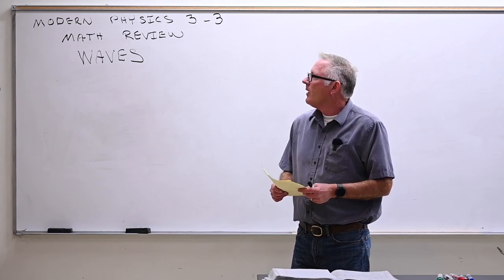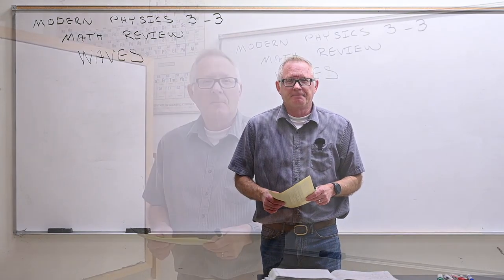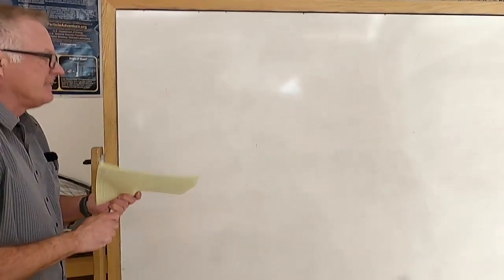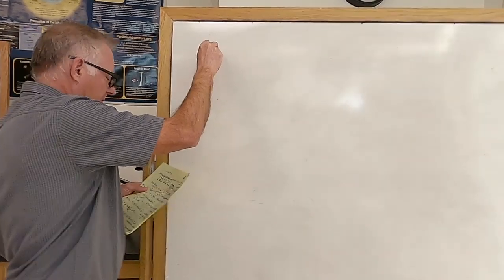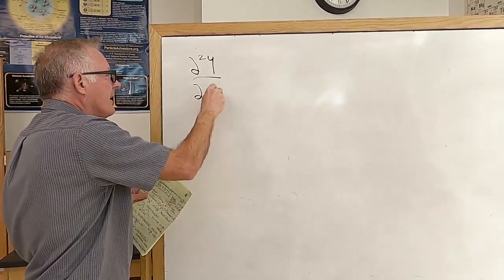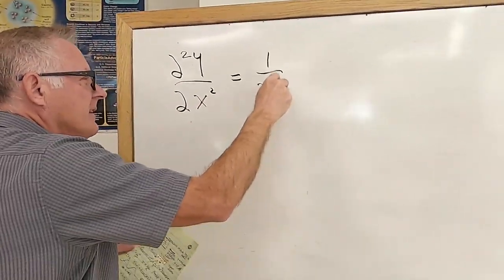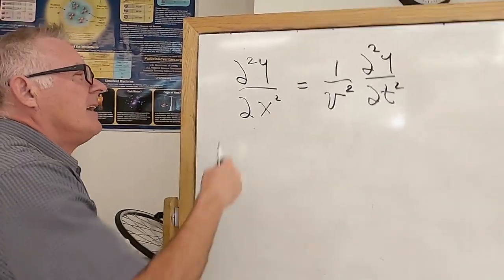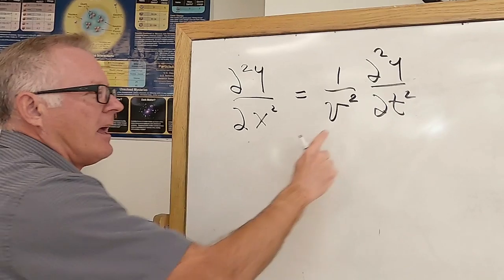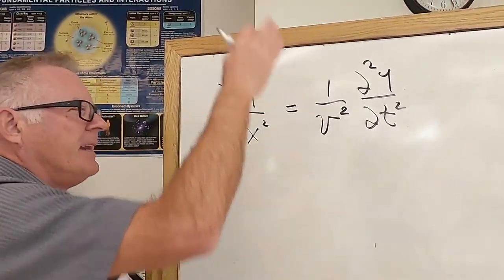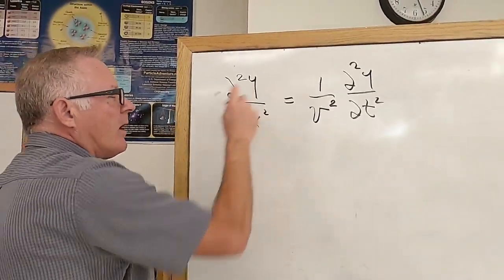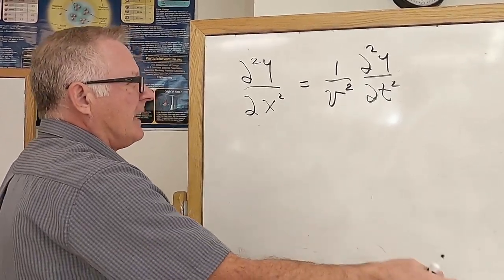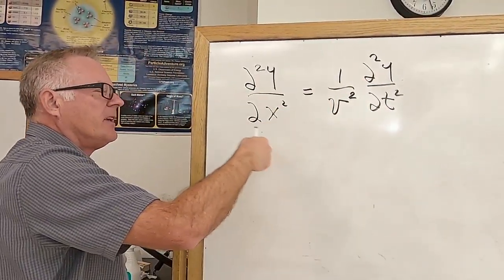Continuing with our review on math, this lecture will be on waves. The wave equation for a transverse wave traveling down the x-axis has this form: the second derivative of y with respect to x squared equals 1 over v squared times the partial second derivative of y with respect to t squared. This describes a wave traveling in the x direction at velocity v, where y represents the displacement — the y position for a string, the height for a water wave, or the electric and magnetic fields for a light wave.